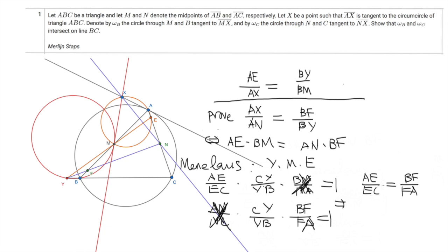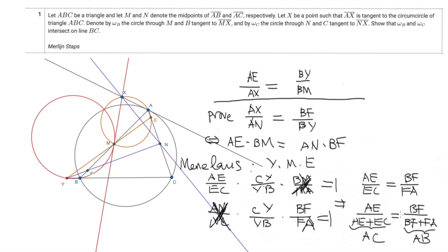Now adding 1 on both sides, we get AE over AC equals BF over AB, which gives AE times AB equals AC times BF. The final step is to remark that BM is half of AB and AN is half of AC, so the relation AE times BM equals AN times BF holds. We have therefore proved that triangle AXN is similar to triangle BFY, which implies XM is tangent to the circle YNC. This concludes the proof. Hope you like it. Thank you.